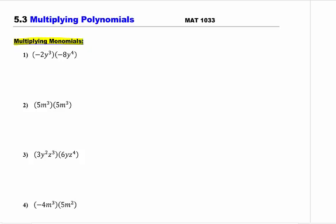This is actually something you did in 5.1. We are going to use the commutative property to multiply the coefficients together, and then use the product rule, which says if I have the same base multiplied together, I keep the base and add the exponents. So here I have negative 2 times negative 8, and y cubed times y to the 4th. I'm going to show that step once, because after this we're going to try to do it in our head. So we get positive 16 y to the 7th.